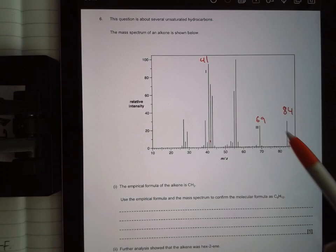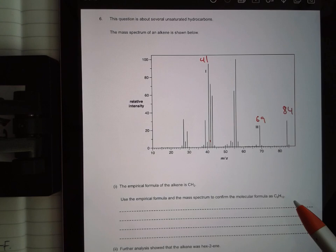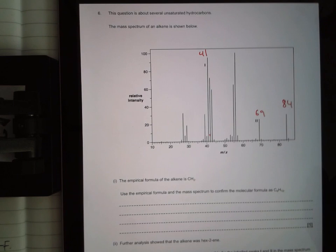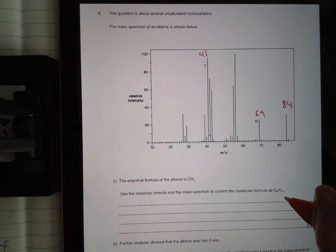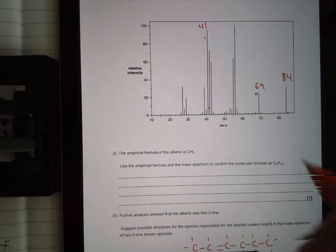Okay, in question 6, you're given the mass spec and the empirical formula and you're asked to confirm that the molecular formula is C6H12. You can look at your mass spec and see that your molecular mass is 84, but it's not enough to just say that the formula mass of C6H12 is 84. You have to use the empirical formula.